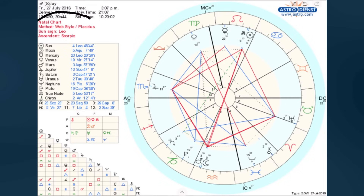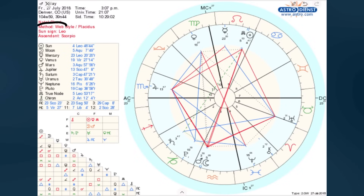Just below that, it says the type of chart — it's a natal chart. It says the method, which is the chart design, calling it web style. This is their default web style chart format when you go to birth chart, ascendant, or whatever it's called on the website. It also says what form of house division was used. Their default is Placidus, but there are other forms of house division. I usually use whole sign houses. Some astrologers use Porphyry, Regiomontanus, or many other forms — you can find those in the advanced chart format. Also useful in this section, it lists your sun sign as well as your ascendant sign, so even if you don't know the symbols for the planets, it will at least tell you right from the start what your sun sign is and what sign of the zodiac your ascendant is located in.